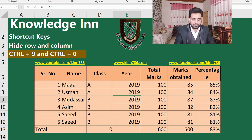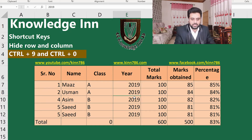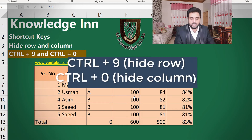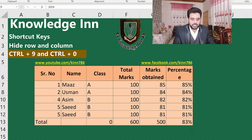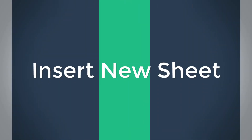Simply Ctrl+9 will hide the selected row and Ctrl+0 will hide the selected column. And if we want to add a new sheet, we simply have to press Shift+F11.